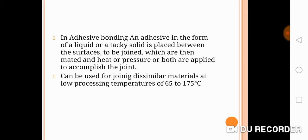In this process, the adhesive in the form of a liquid or tacky material is placed between the surfaces to be joined. After placing the adhesive, the material is heated; sometimes pressure is applied, or heat and pressure are applied after some time of application. After heating or applying force, the joint is obtained.